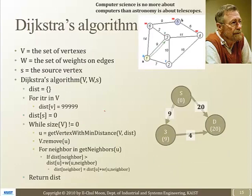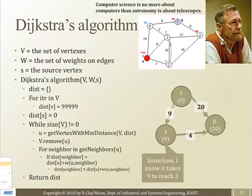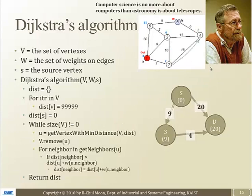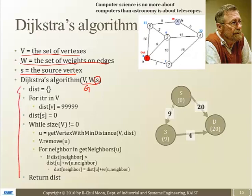So the Dijkstra algorithm. This was the one who invented this algorithm. Here, V is the vertices and W are the weights, the set of weights on edges. S is the source vertex. So input is the graph structure and the source vertex. This is the pseudo-code mechanism of Dijkstra's algorithm.